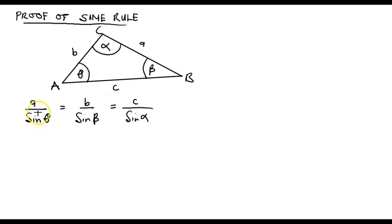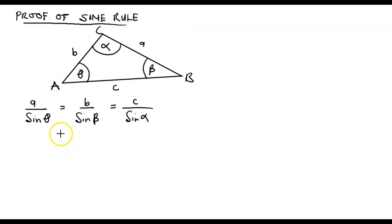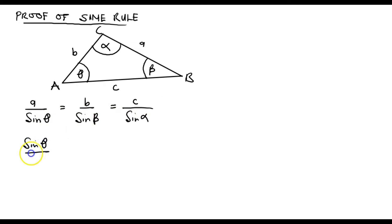What you need to note is that the Sine Rule shows a relationship between the sides of a triangle and the corresponding interior angles. We are going to learn how to prove this. There is another way of writing it: sine of theta divided by side A, equal to sine of beta divided by side B, equal to sine of alpha divided by side C.